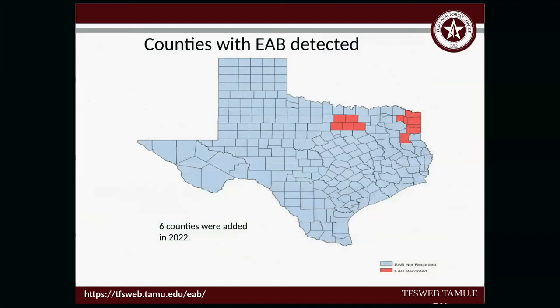Question: How long does it take to kill the tree? Three to five years. If you treat with insecticide, you'd treat every few years, and we recommend treating within 15 miles of where it's been last detected. The treatment is similar to oak wilt injection — you drill into the tree and force a systemic insecticide inside to kill it. There's a current map on our website showing the counties where EAB has been detected — we've added six counties this year. The website is TFS TAMU — search it on Google along with EAB and it should be the first result.